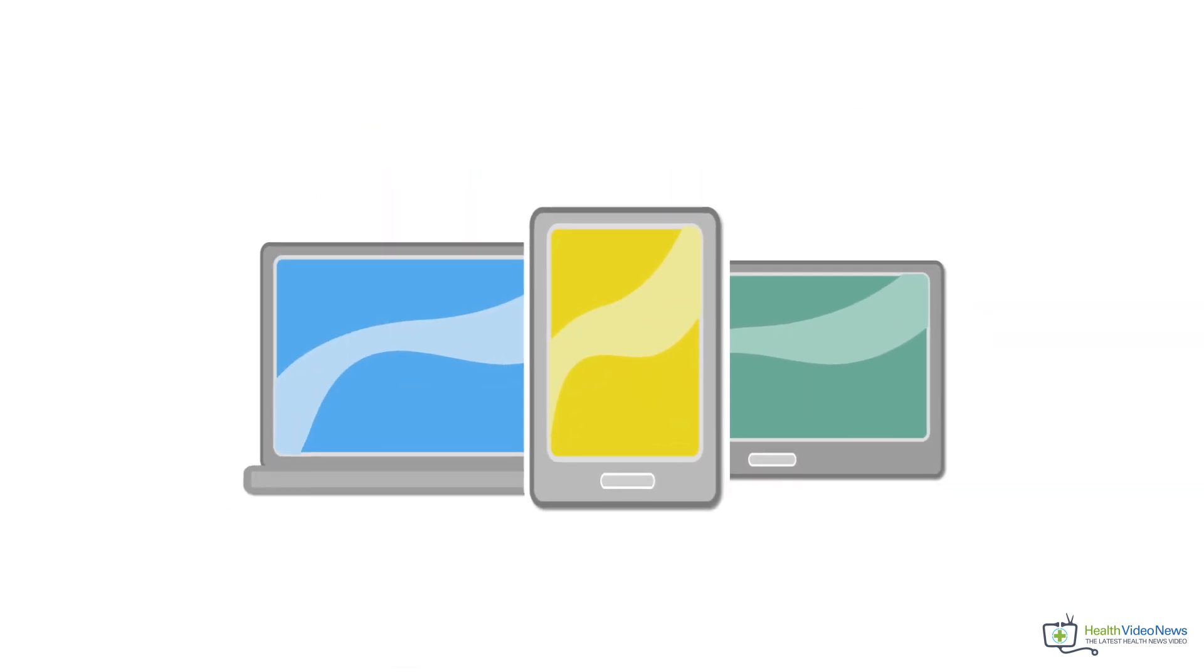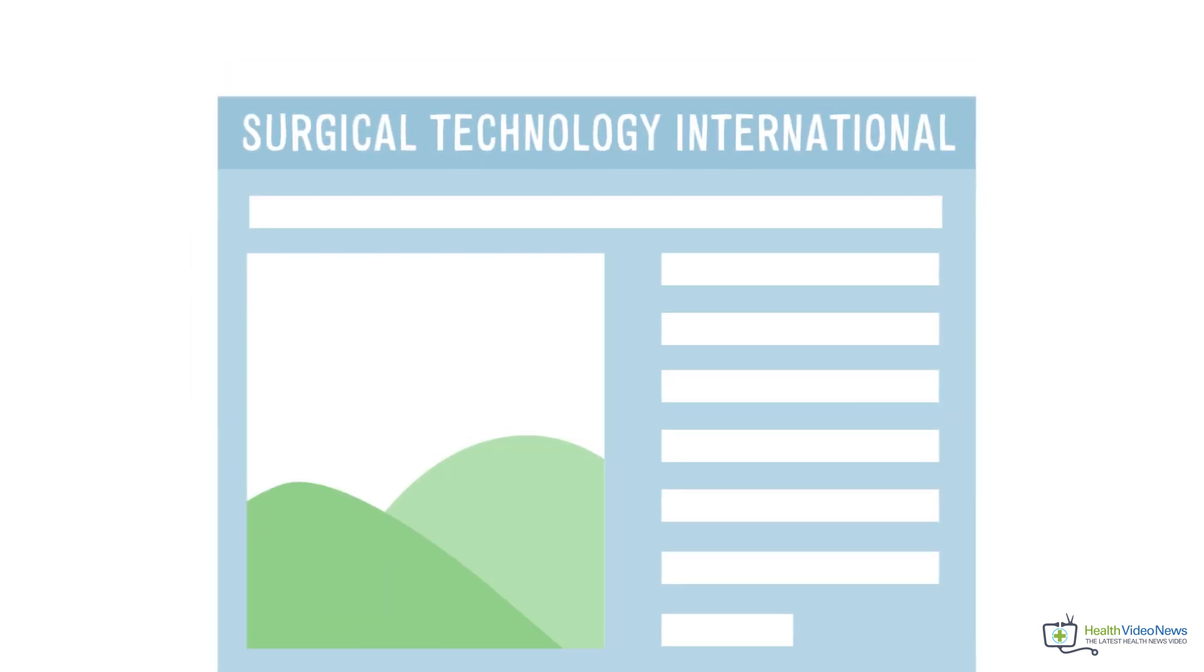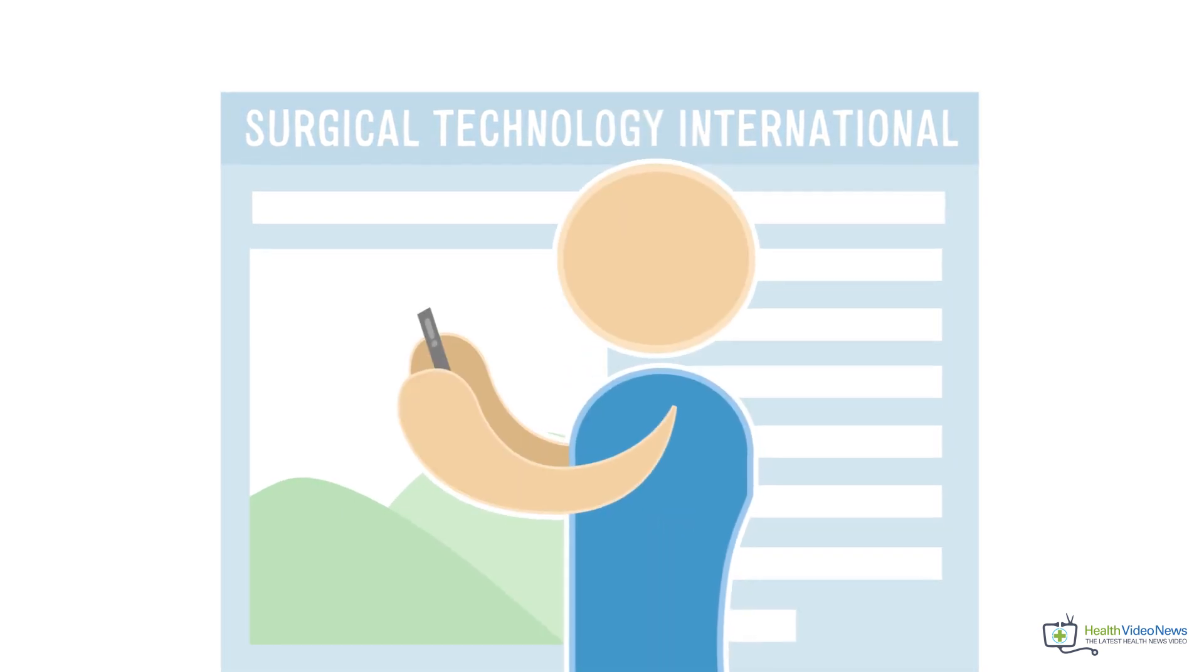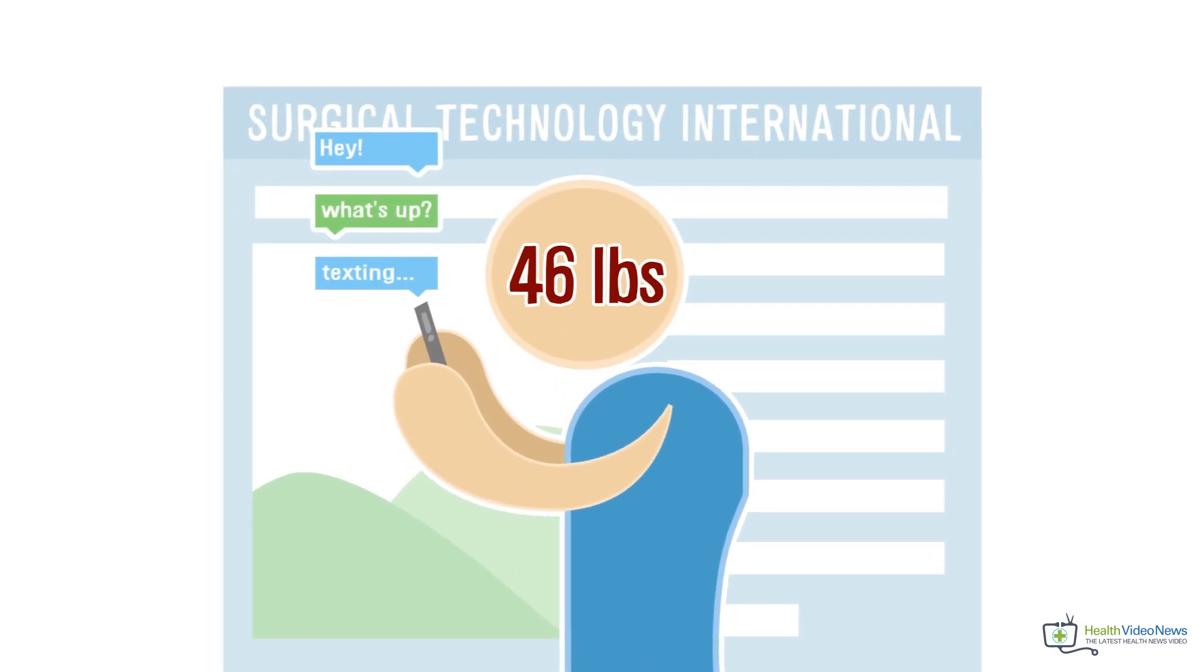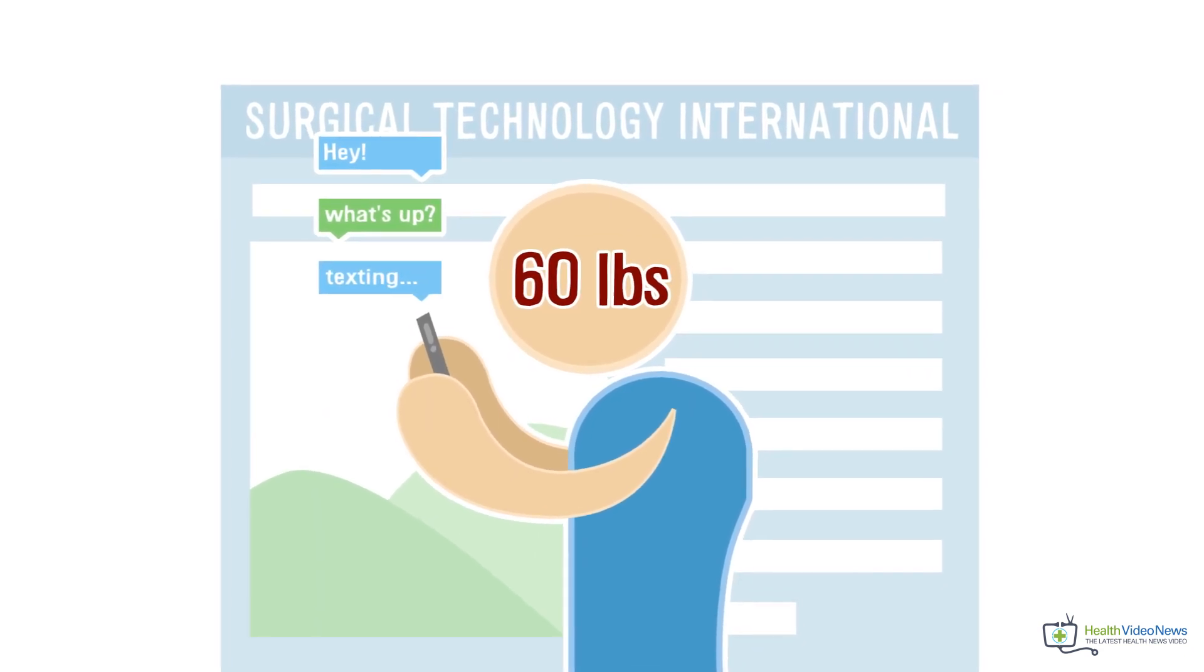Cell phone devices and electronic gadgets are now the greatest promoters of poor posture. A new study published by Surgical Technology International reveals that the forward tilting of the head, a common position seen when texting, exerts pressure up to 60 pounds on the cervical spine depending on the angular position of the head in relation to the neck.